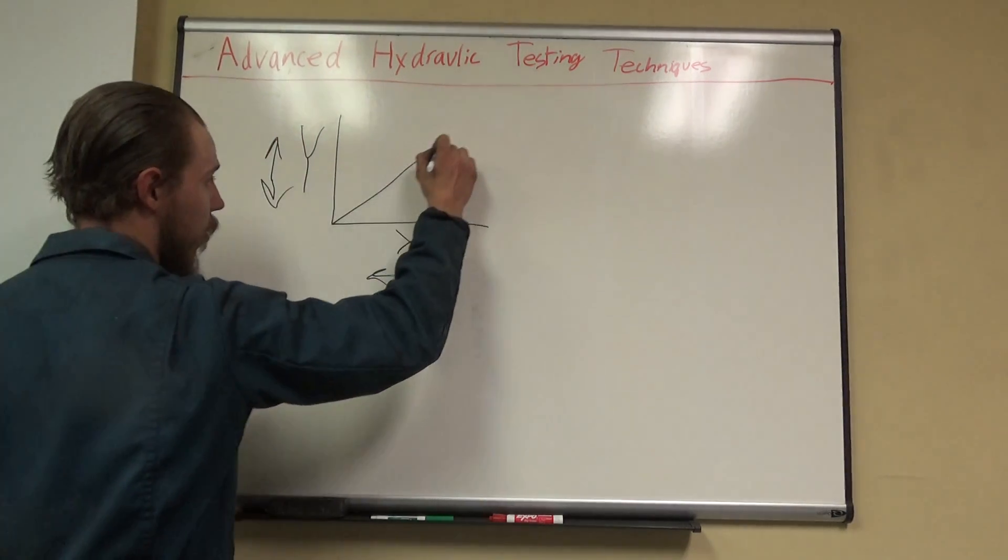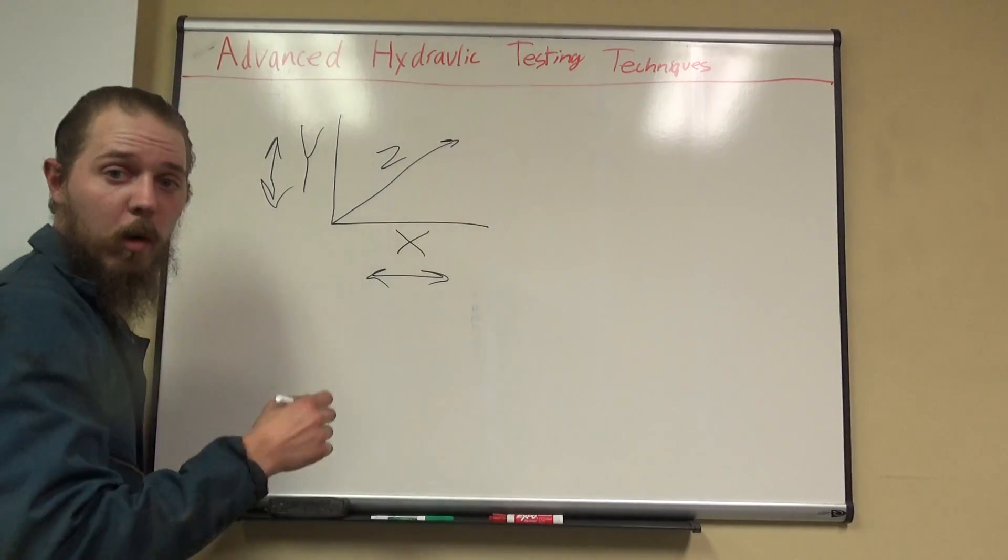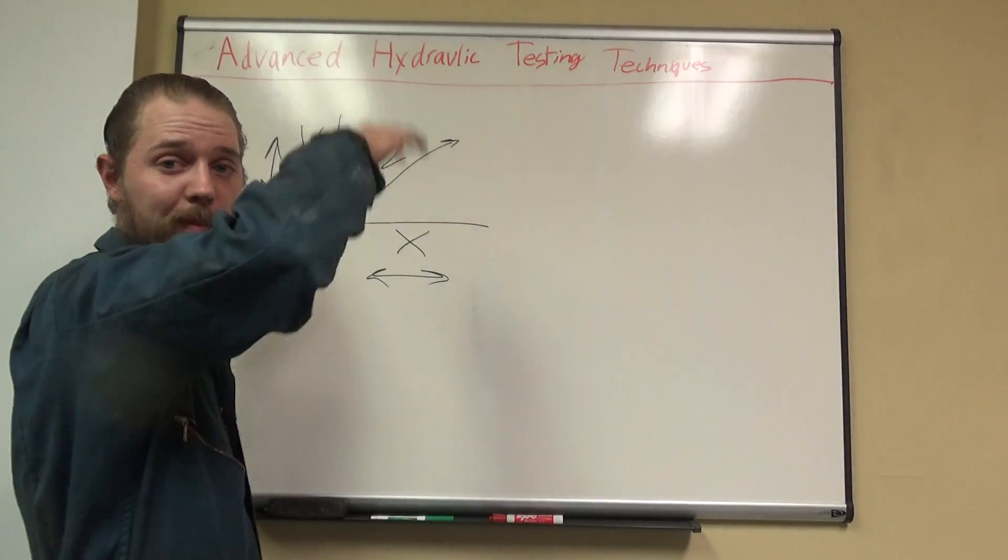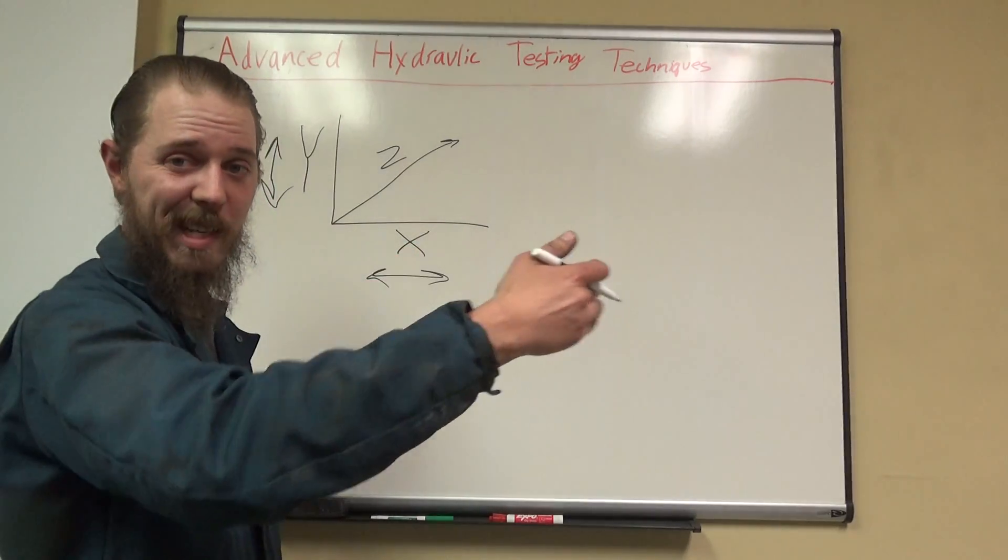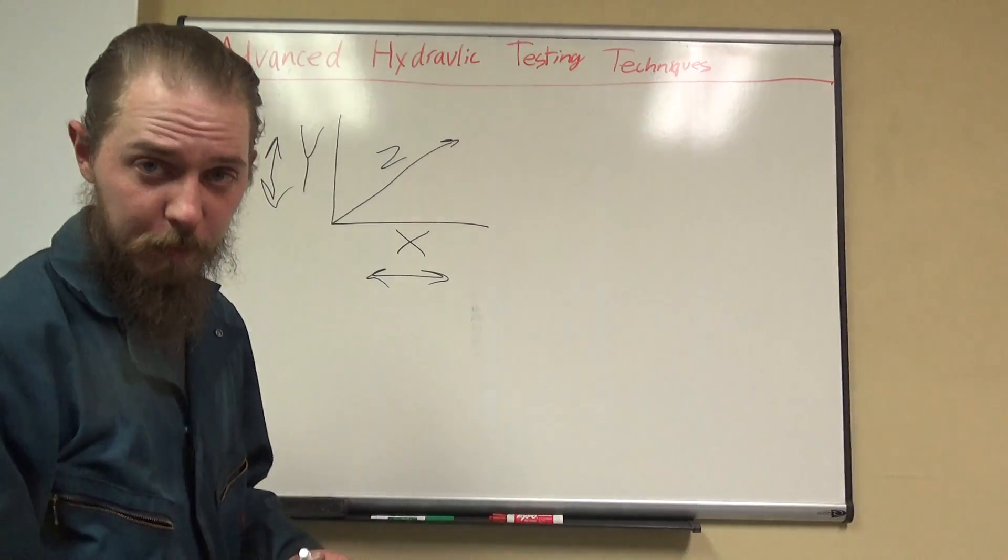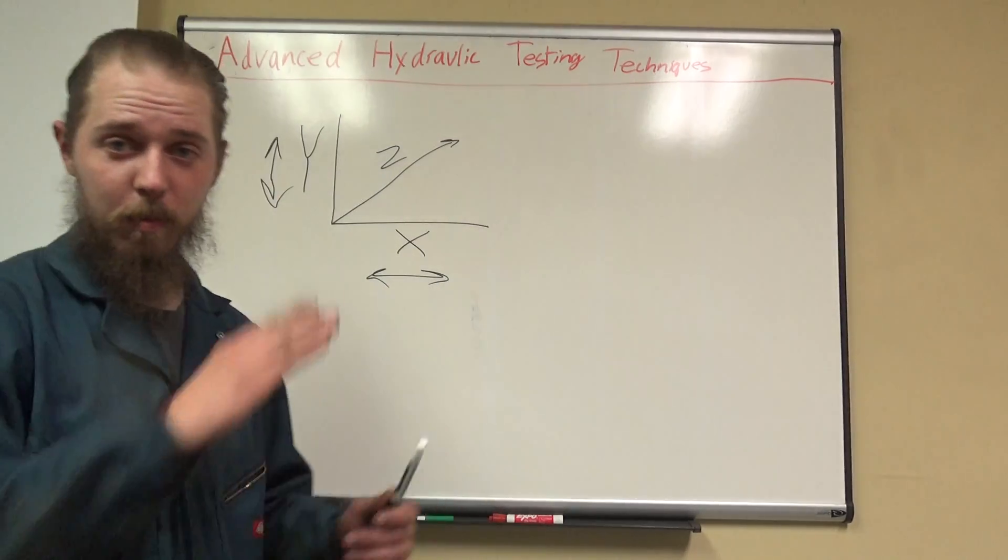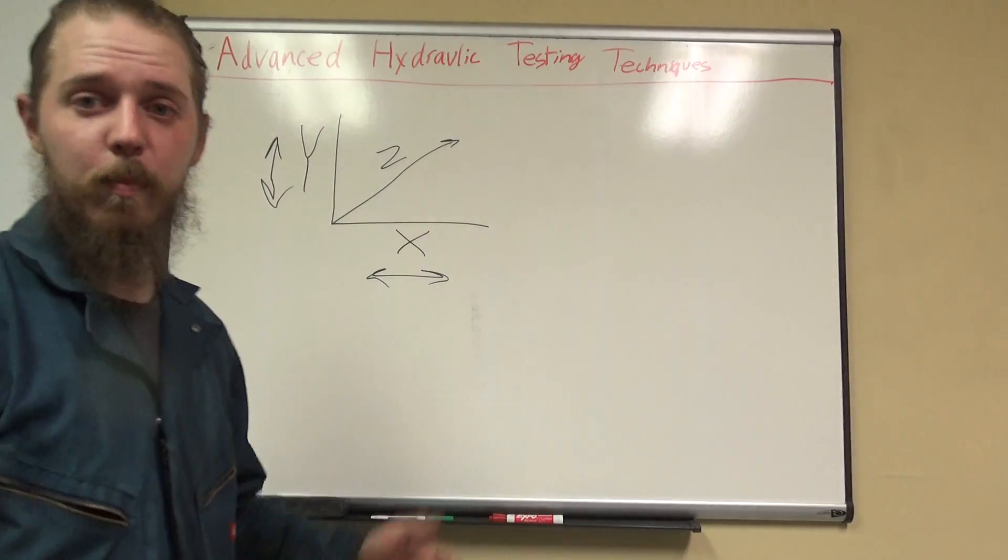So Y up and down, X left to right, Z front to back, fore and aft, however you want to put it. They measure in three directions. Well, that's good, but the problem with hooking up just a standard accelerometer to a hose...